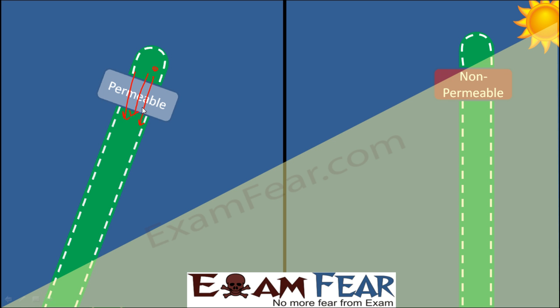So another piece of information was gathered: whatever is in the shoot tip causes bending, but the bending doesn't happen at the shoot tip itself — it goes down to a lower portion of the stem. From our knowledge of growth phases, this portion is the elongation zone, where actual lengthening of the shoot takes place.